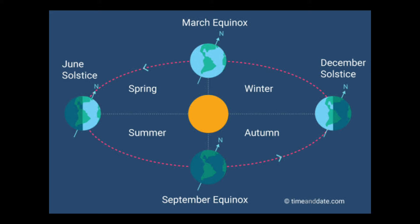So tingnan naman natin yung September. Based on this figure, it is spring at the south of the equator and fall north of the equator. Bakit ganun ang nangyayari? It is because the sun shines equally — pantay lang ang pagsikat ng araw doon sa southern and northern hemisphere.